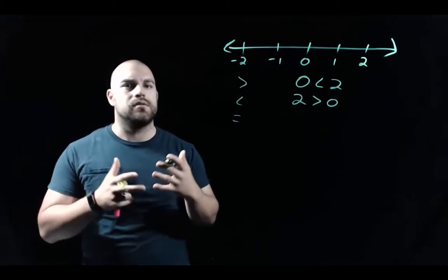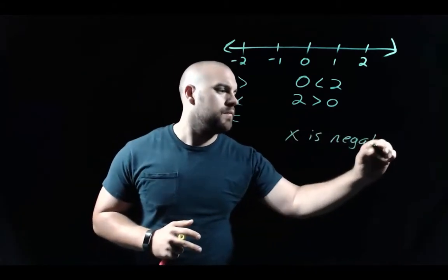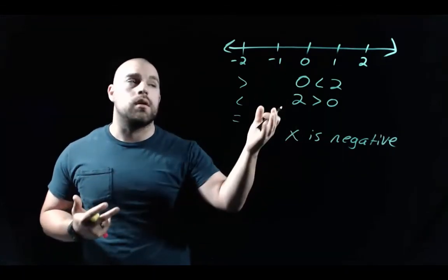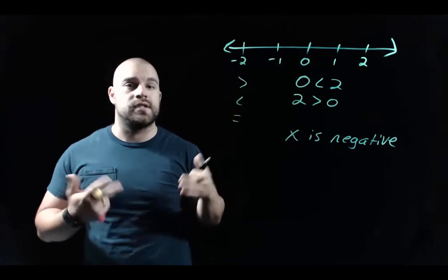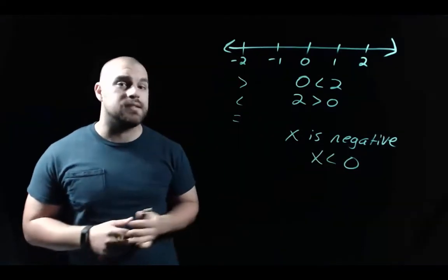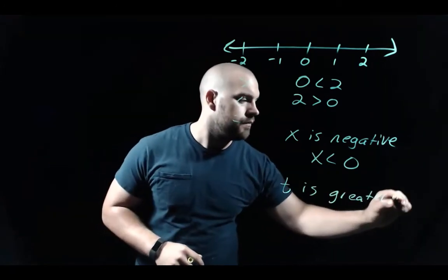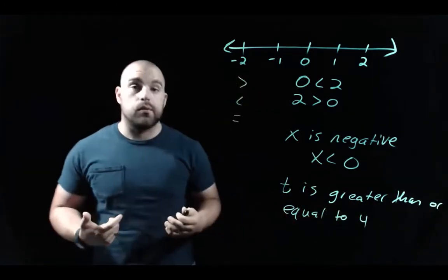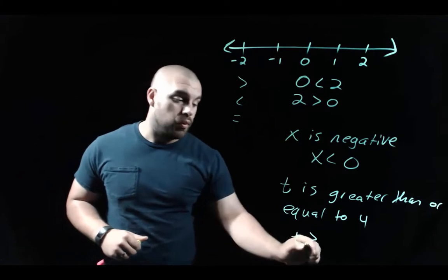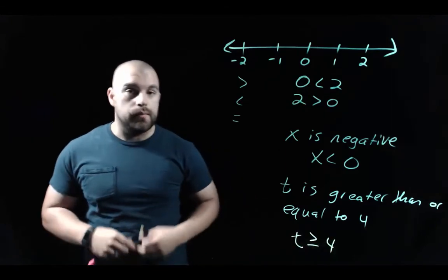We can also talk in generalities. If x is a negative number, then x is less than 0, since negative numbers appear to the left of 0 on the number line. Or if t is greater than or equal to 4, we write the inequality using the greater than symbol with a horizontal line underneath it: t ≥ 4.